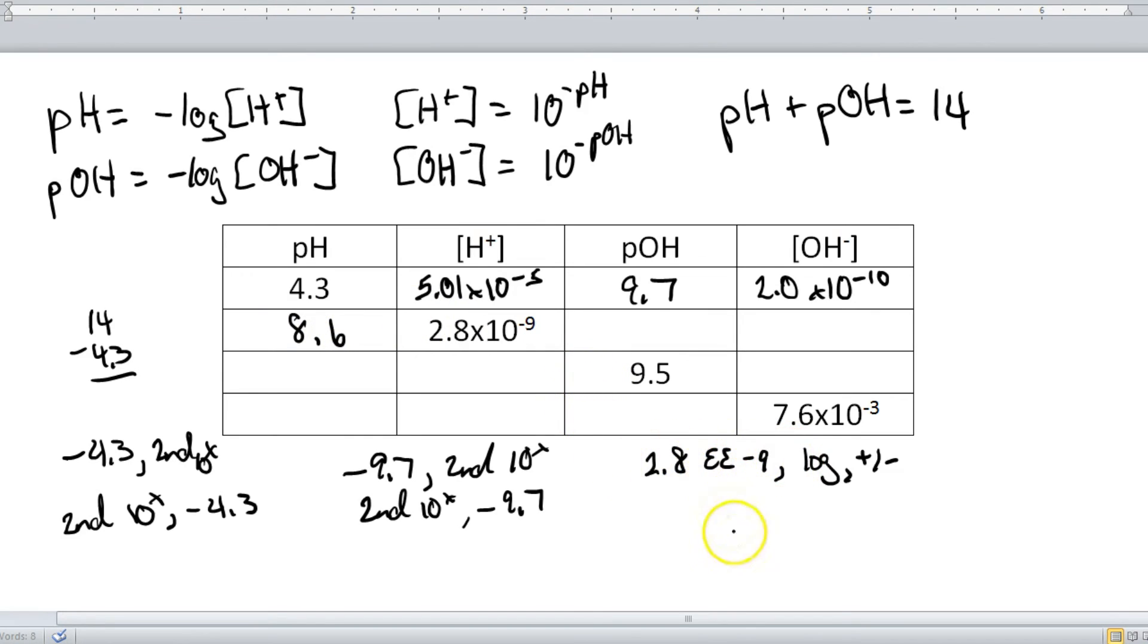If your calculator goes the other way, then you will type in negative log, so negative button first, then the log, and then you type in 2.8 EE negative 9. And you should get the same answer.